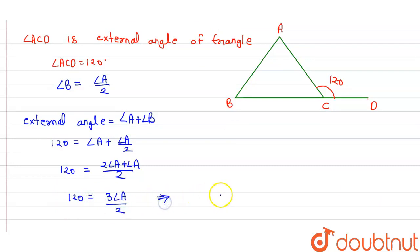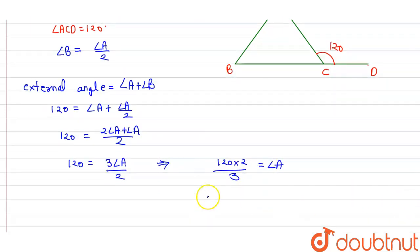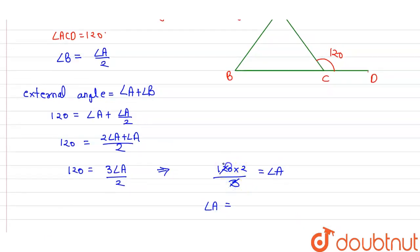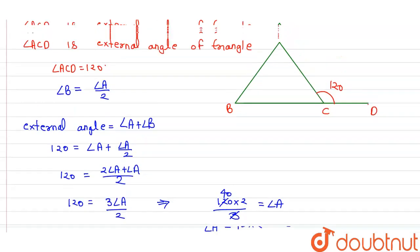Then further we solve this and get 120 times 2 by 3 equals angle A. And here we can find the value of angle A. Then it will be 40 times 2 equals 80. So the value of angle A is 80.